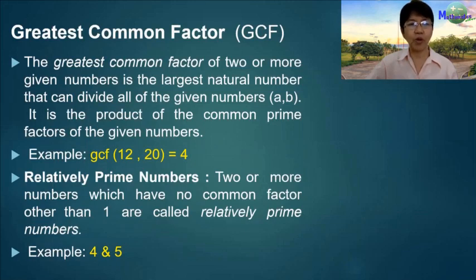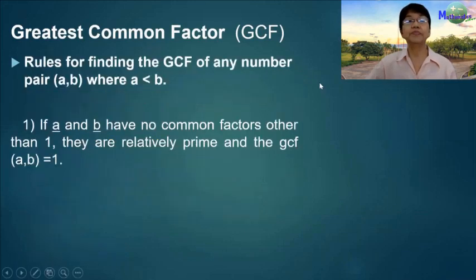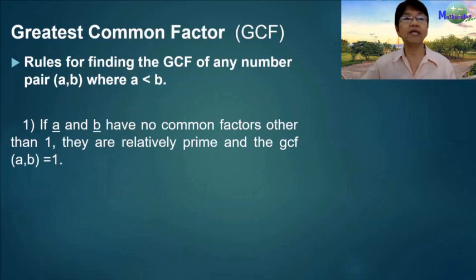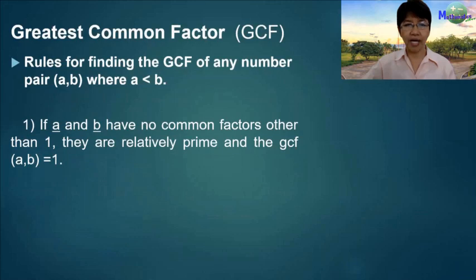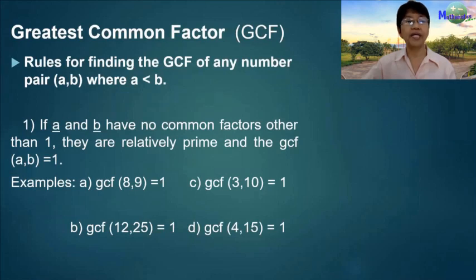Rules for finding the greatest common factor of any number pair A and B, where A is less than B. Rule 1: if A and B have no common factors other than 1, they are relatively prime and the GCF of A and B is equal to 1. Examples: GCF of 8 and 9 is 1; GCF of 12 and 25 is 1; GCF of 3 and 10 is 1.